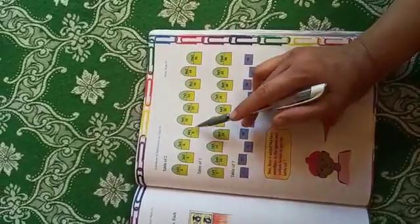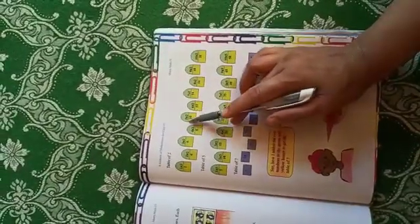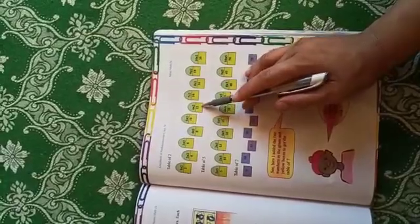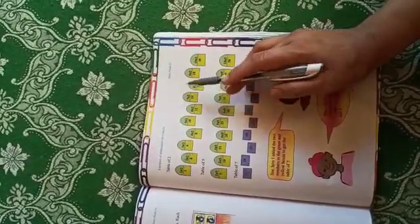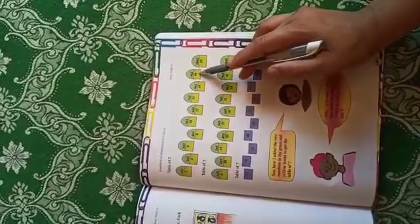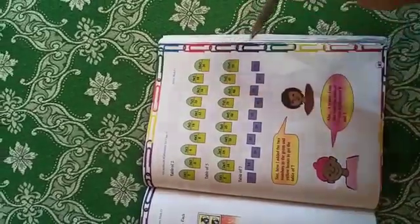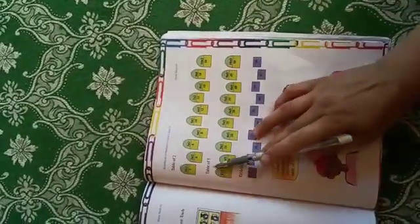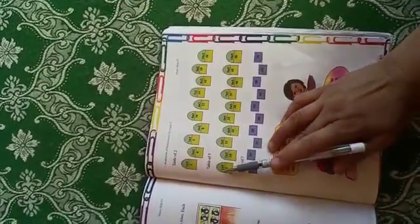Two fives are ten, two sixes are twelve, two sevens are fourteen, two eights are sixteen, two nines are eighteen, two tens are twenty. Now the table of five: five ones are five, five twos are ten.